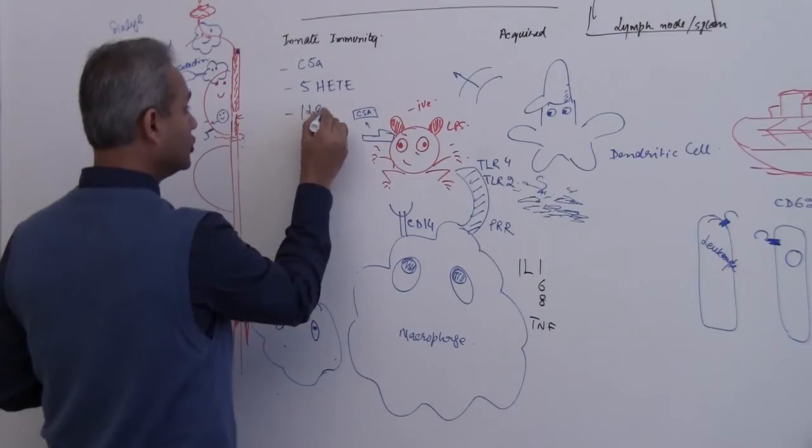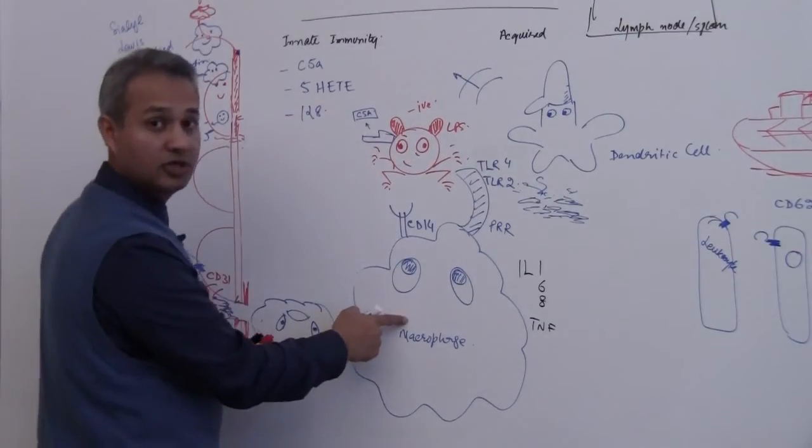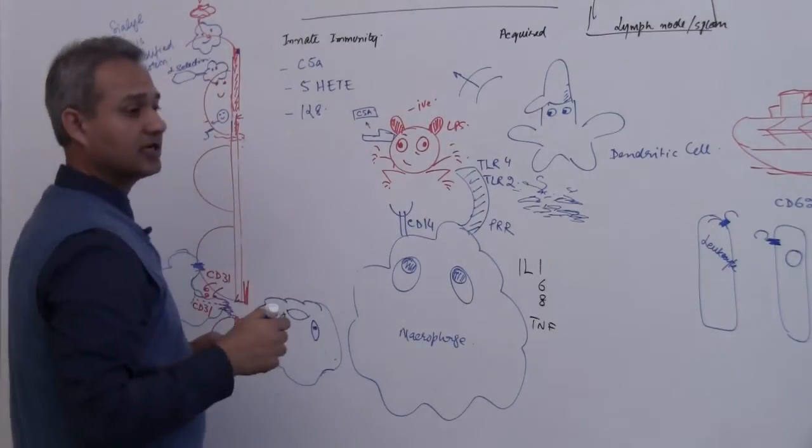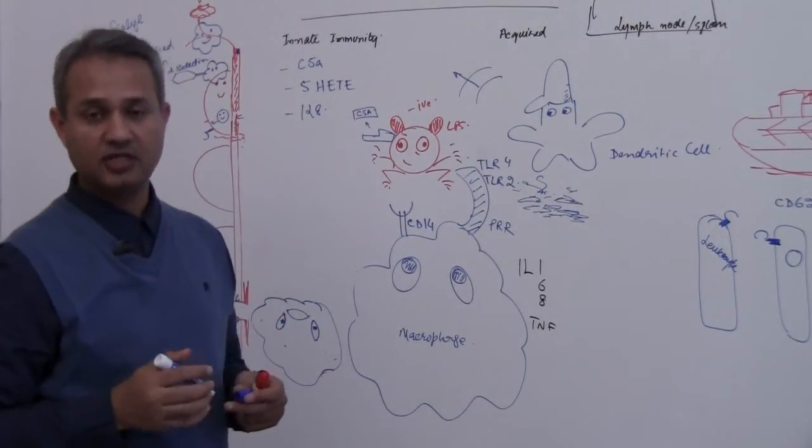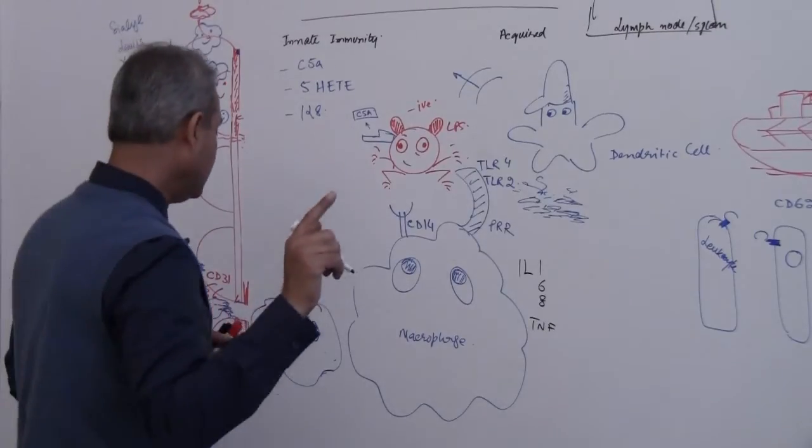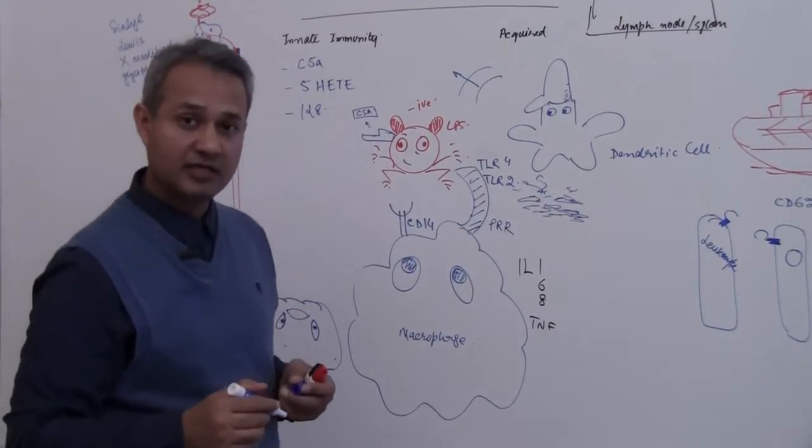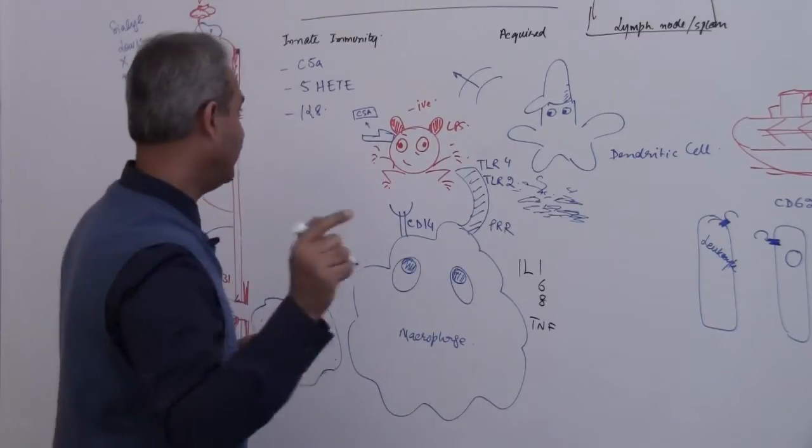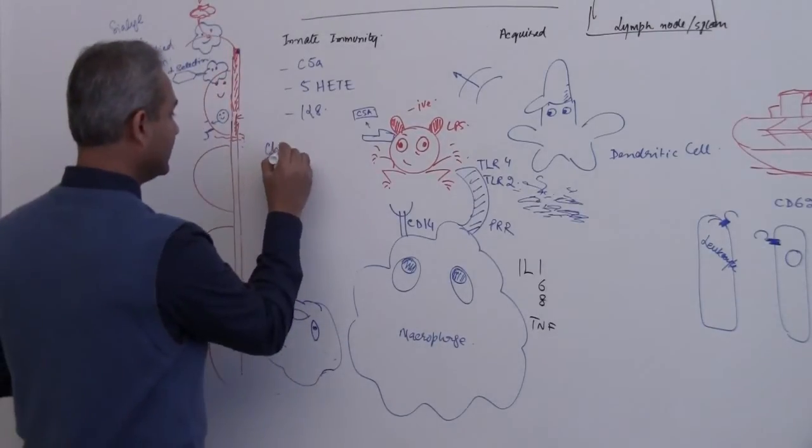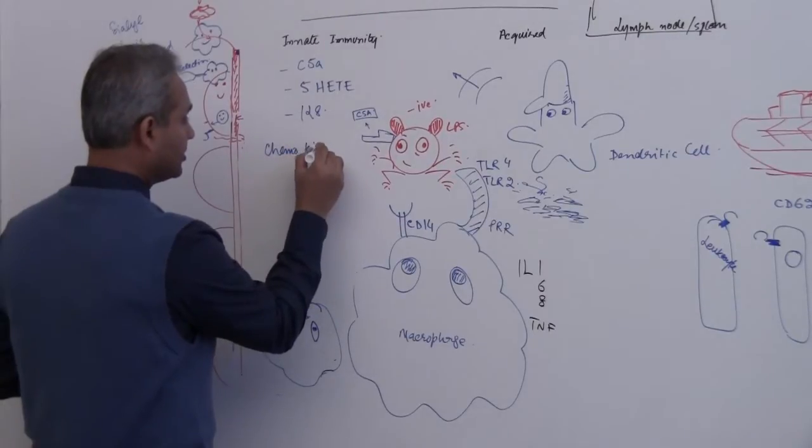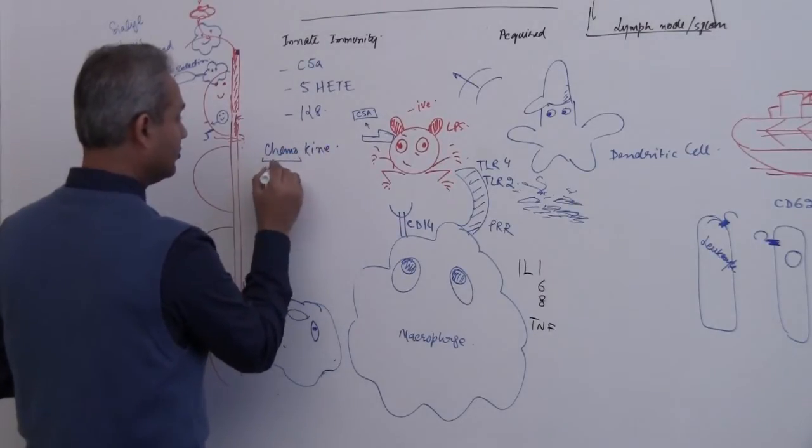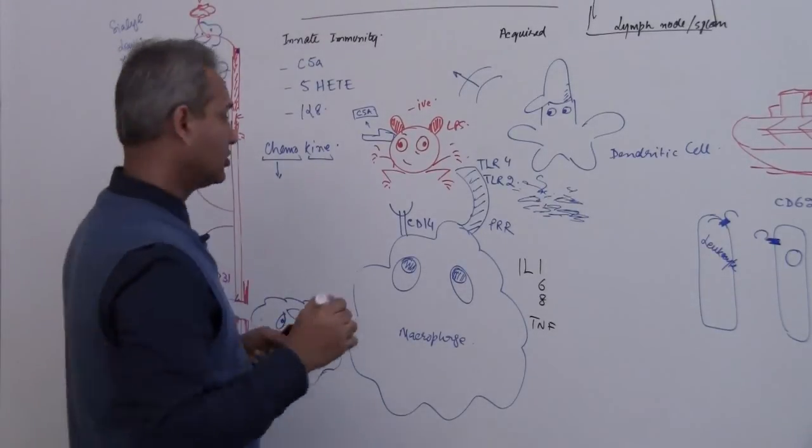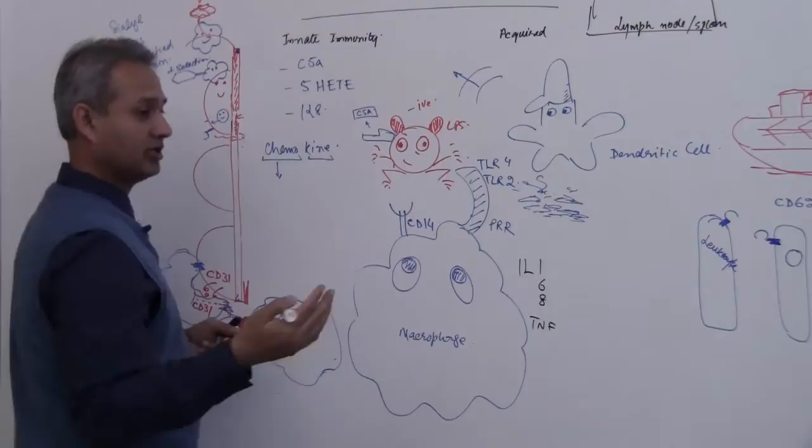Then we have interleukin, you know where interleukin comes from, interleukin comes from the macrophage. So these are chemotactic factors and there are many others. These are called chemokines if these are chemotactic for macrophage and neutrophil. It stands for chemo for chemotactic and kine for cytokine. So chemotactic cytokine is called a chemokine.